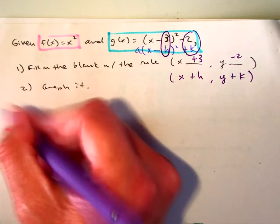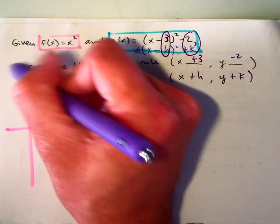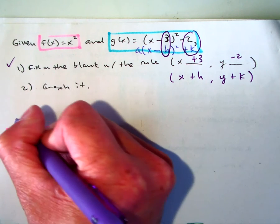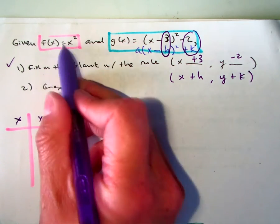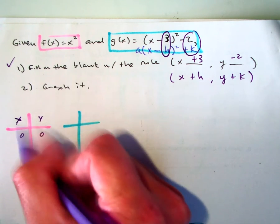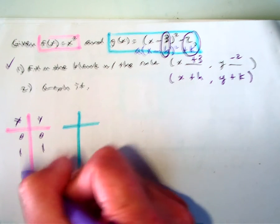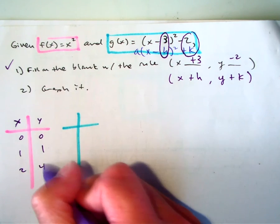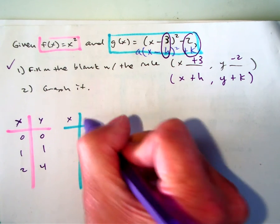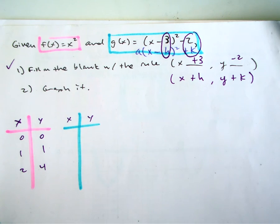So we talked about you don't have to have a table of values, so we just did our fill in the blank with the rule. And our parent function has the order pairs. If you put in a 1, you get 1 squared is 1. 2 squared is 4. But now what we're doing is we're adding those values, right?